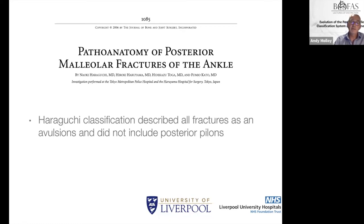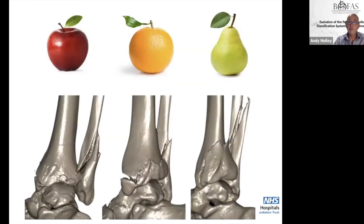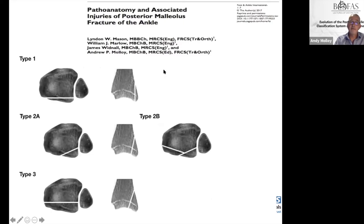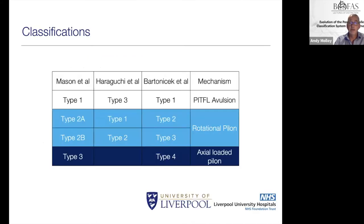The original classification was by Hariguchi — a nice classification, but it doesn't progress stepwise in severity and has no treatment algorithm attached. We felt we could improve on it, as several types were grossly different and should be managed differently. We took 120 consecutive CT scans to base our classification on. From our publication in FAI: type 1s are PITFL avulsions, type 2s are rotational pilons with two subsets (2a and 2b), and type 3s are true posterior pilons.